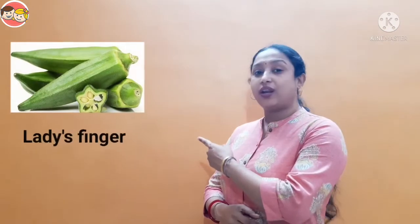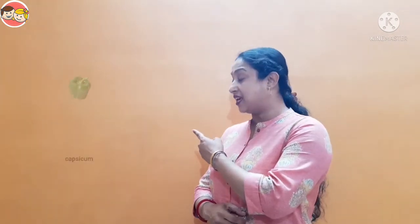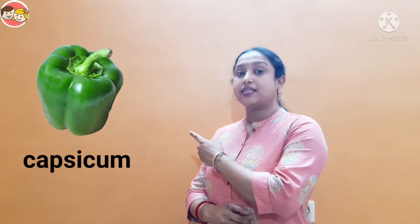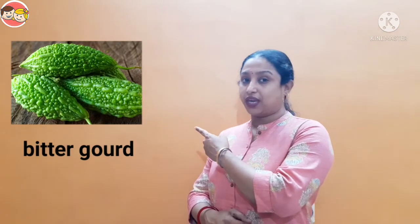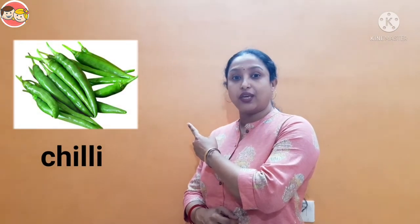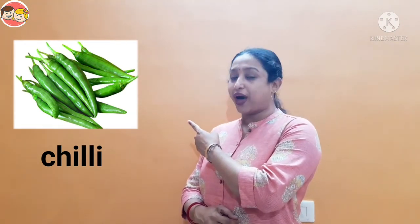Now let's move on to green vegetables. Green vegetables are green in color. This is lady's finger — means bhindi. This is capsicum. This is green peas — means mutter. This is bitter gourd — means karela. This is chili — chili is hot and spicy.